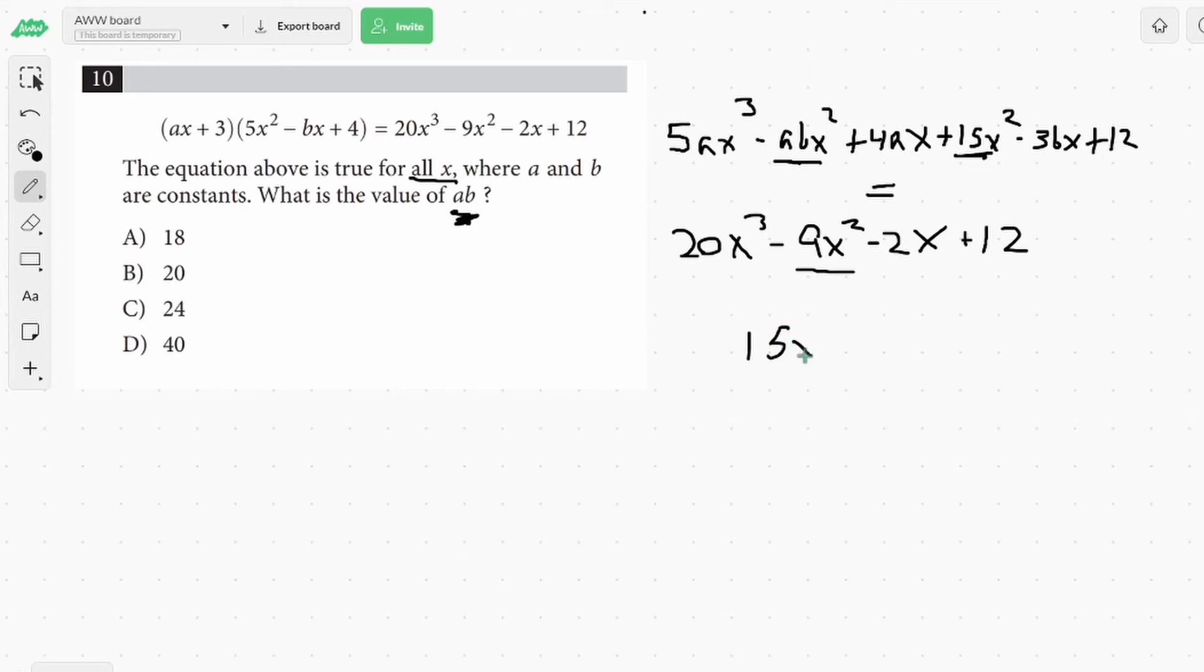You get 15x squared minus abx squared equals negative 9x squared. They all have an x squared term, so I can cancel that out. And then if we move some things around, subtract 15 from both sides, we get negative ab equals minus 24. And because they're both negative, I make them positive, get ab equals 24, and our solution would be C.